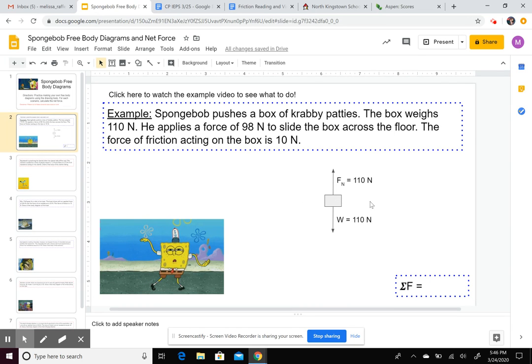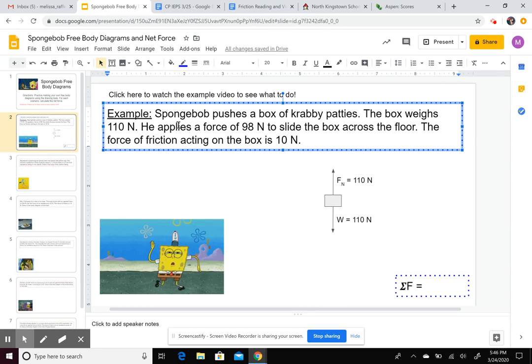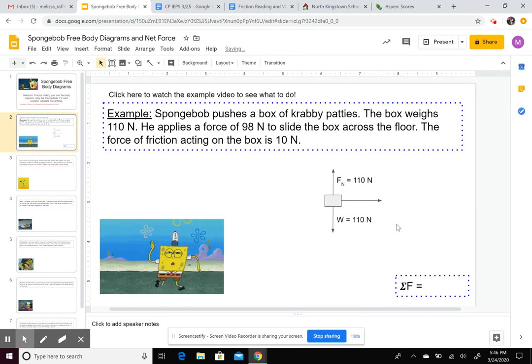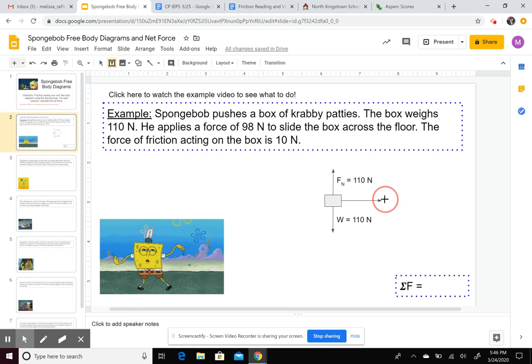And now we need to work with our horizontal forces. So the applied force, he applies a force. So 98 Newtons is an applied force. We almost always draw that in a positive direction unless it specifically states otherwise. So that's 98 Newtons. Grab a text box, label it.